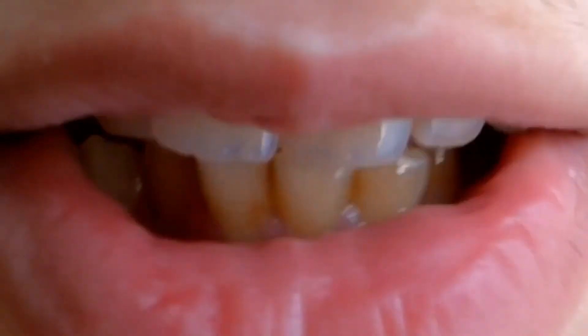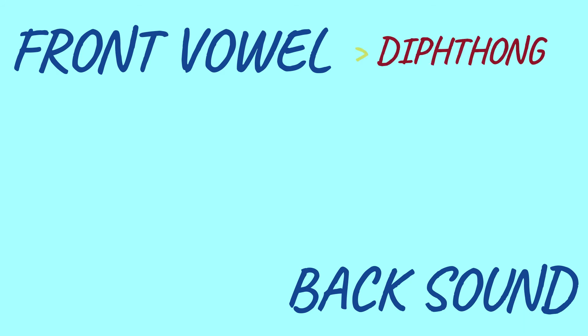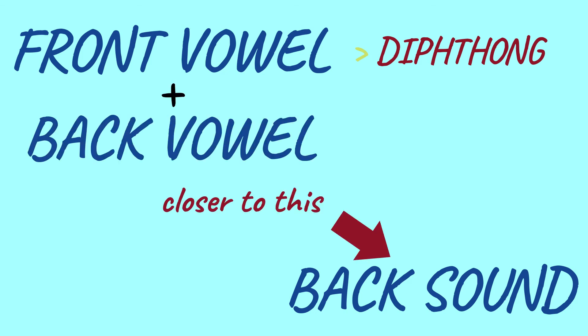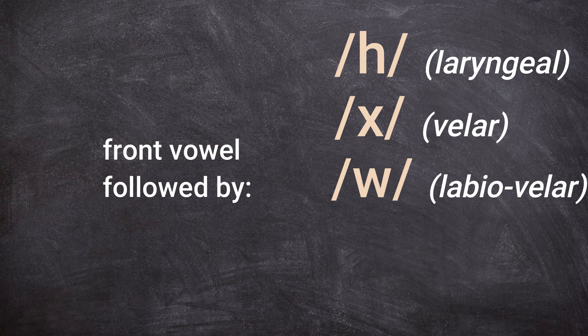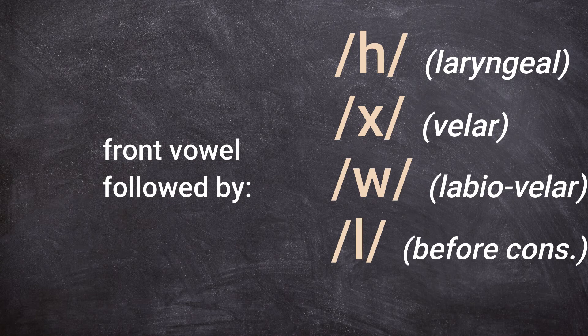We have already talked about that in video number seven. A phenomenon which is similar to metaphony, because it is also based on the influence of a sound on another one which usually precedes, is the so-called breaking. In this case, in order to simplify the transition from a front vowel to a velar sound, people transform the vowel into a diphthong, whereby the second part has a place of articulation which is closer to the velar area of the second sound, that is a back vowel. This happened in Old English when a front vowel preceded some consonants, which were supposed to be articulated using the back part of the oral cavity. For example, which is a laryngeal or glottal sound, which is a velar sound, and which is labiovelar. Another sound which could cause breaking was, but only if followed by another consonant.